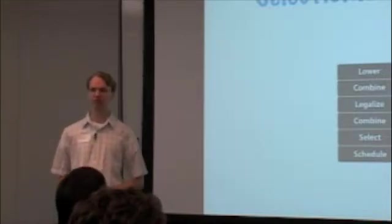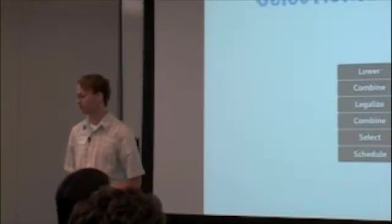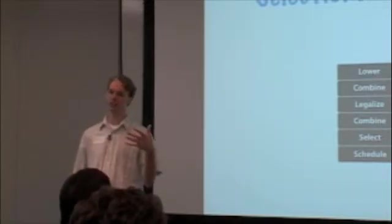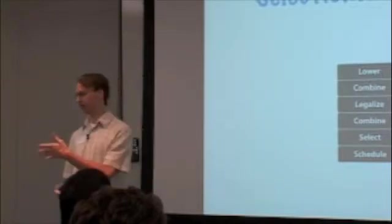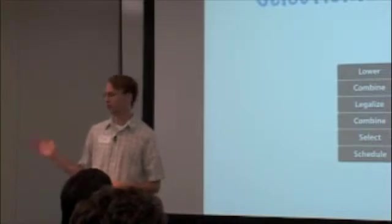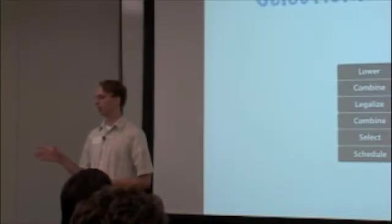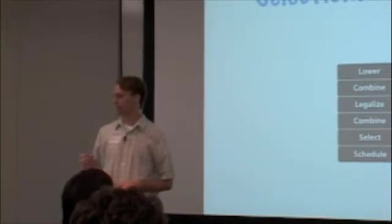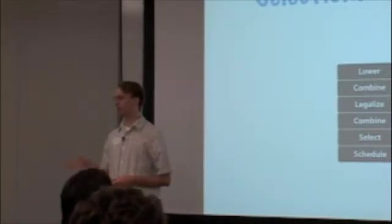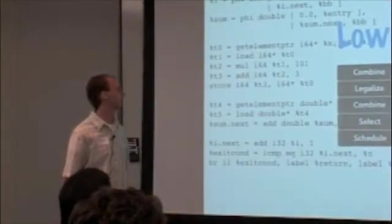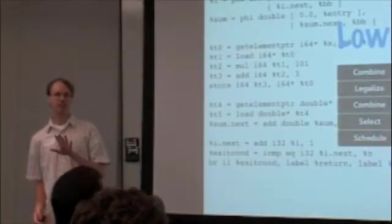The selection DAG has six main steps. The lower step, which is producing the selection DAG, looking at the LLVM-IR as input, and writing a selection DAG as output. The combined phase, which is a peephole style optimizations and simplifications. Legalize, which lowers operations that are not legal for the machine. Another pass to the combined phase to do more optimizations. Then we do instruction selection proper. And then finally scheduling. So I'm going to walk through each of these steps in detail.